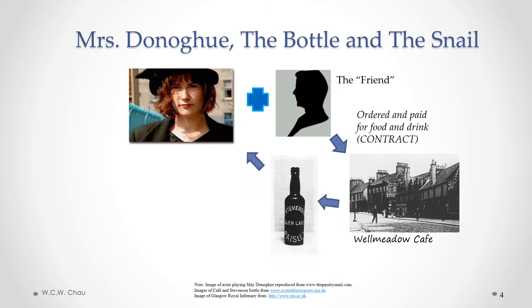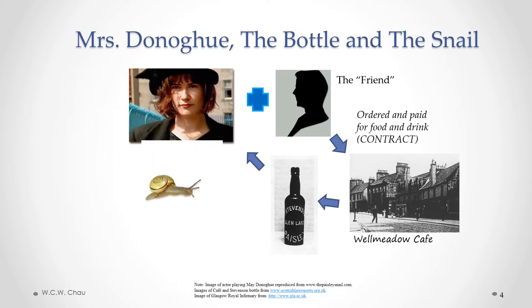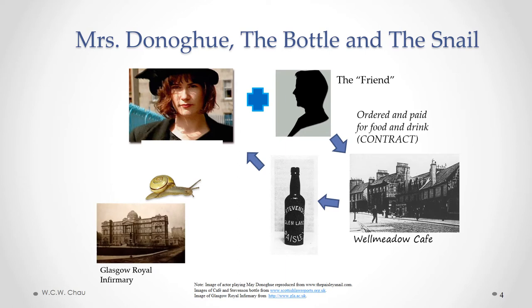Some of that drink was a bottle of ginger beer, which was consumed by May Donoghue. After she had finished drinking the whole bottle, a snail poured out of the bottle — a dead, disgusting, decomposed snail that had been in the drink she had just consumed. She immediately felt very ill and was eventually admitted to hospital at the Glasgow Royal Infirmary. After she left hospital and recovered, she sued the manufacturer of the ginger beer, a David Stevenson.